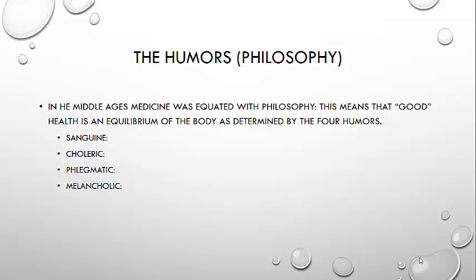How do characters act based upon each of these four humors? As you take a look at this next lecture, how do these details tie to your knight, your squire, your prioress, your friar, your Wife of Bath — each of the 29 characters on this journey? You can do this.